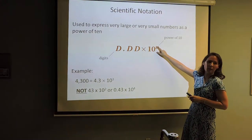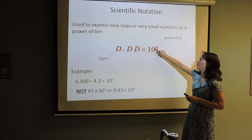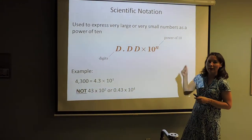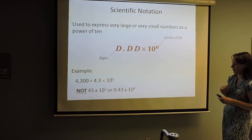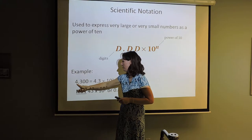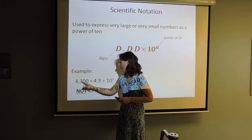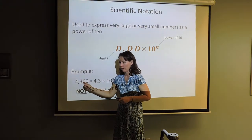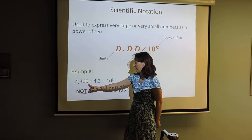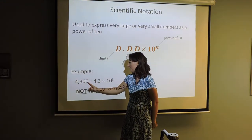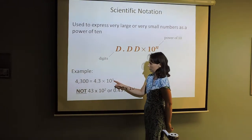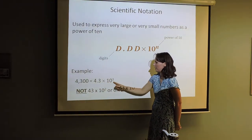How do you get the exponent? That little number comes from the number of spaces you would have to move the decimal to get it where it needs to be. For instance, if I'm writing 4,300 in scientific notation, the decimal is currently at the end. It needs to move one, two, three places — which is why it's 4.3 times 10 to the third.